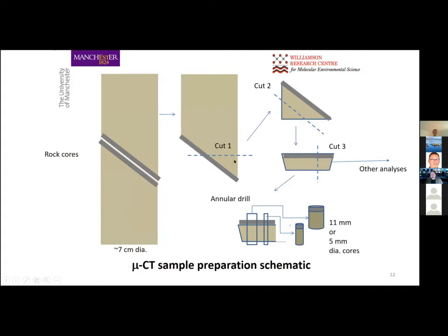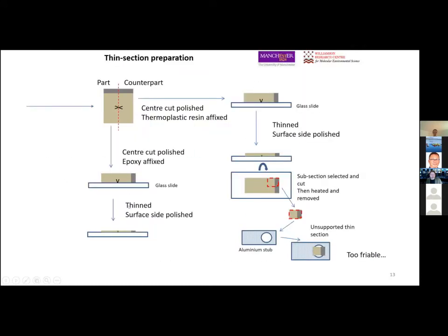The specimens are approximately seven centimeter diameter rock drill cores. We have a fracture surrounded by greater or lesser quantities of altered rock. An annular drill was used to subsample: I'll discuss analysis of an 11-millimeter diameter small core examined by micro-CT. Offcuts were used to prepare other areas for analysis including standard thin sections. We also tried to create non-supported thin sections to avoid contamination from the glass underneath, but because of the alteration in the sample it was too friable — don't try this with Toki granite samples.